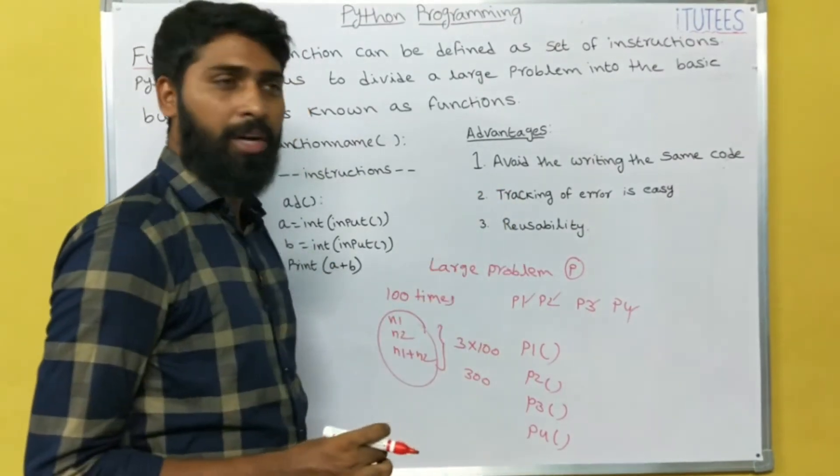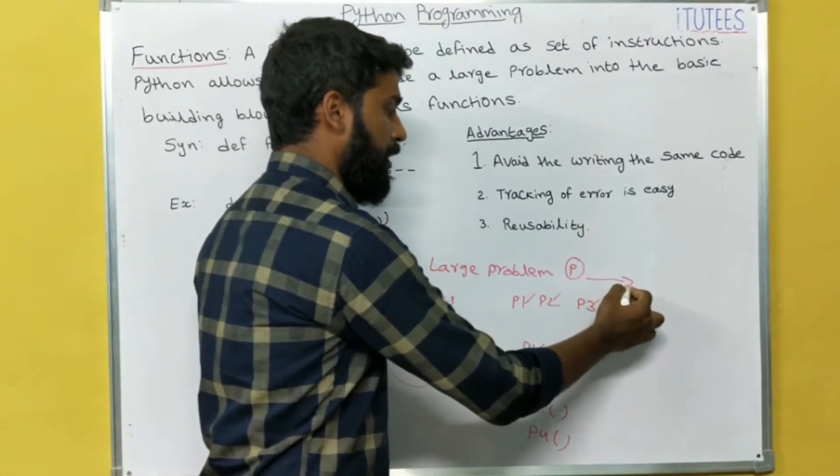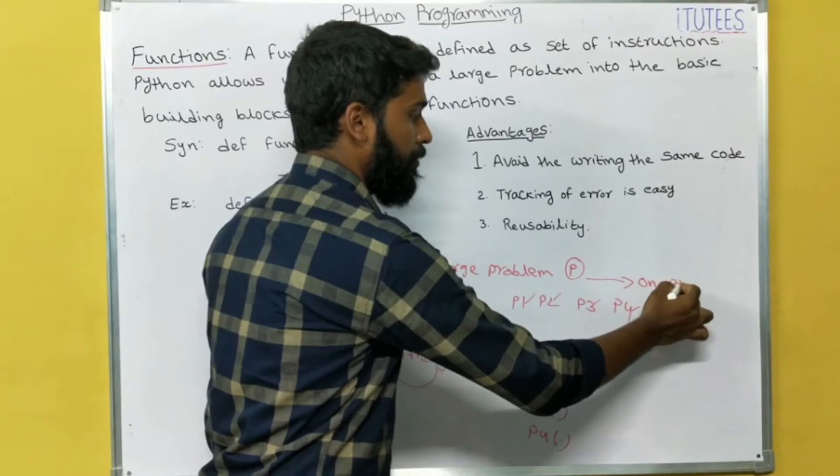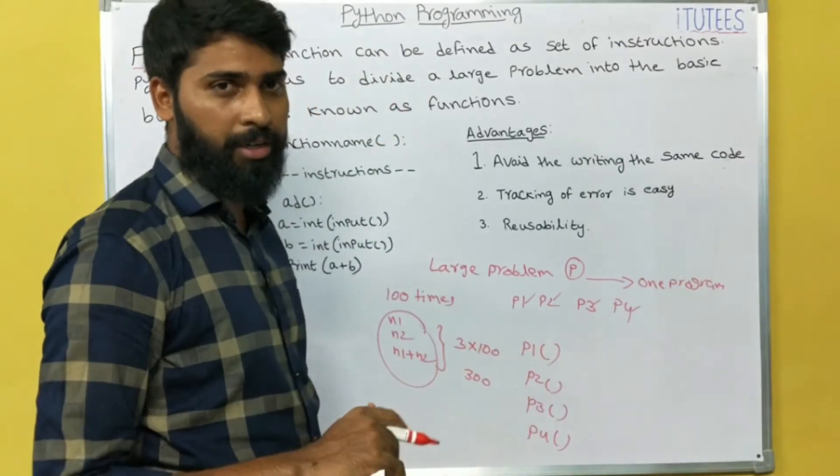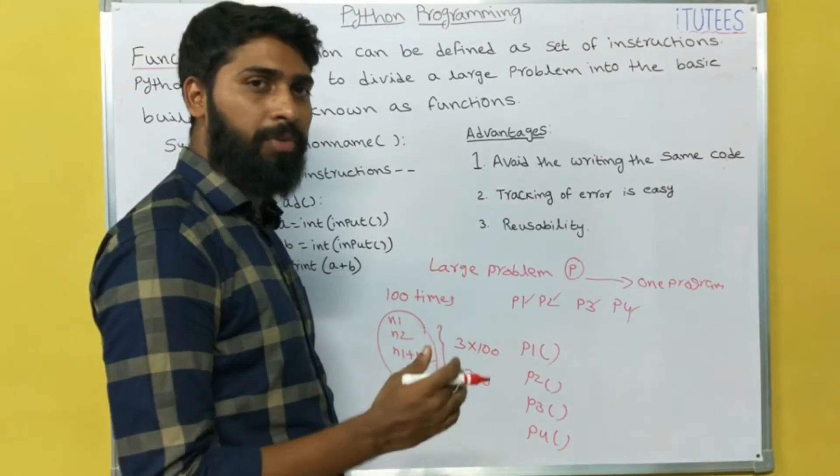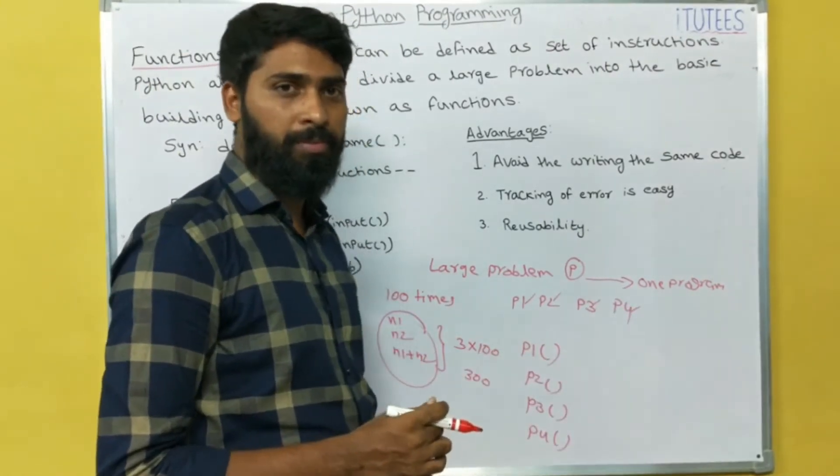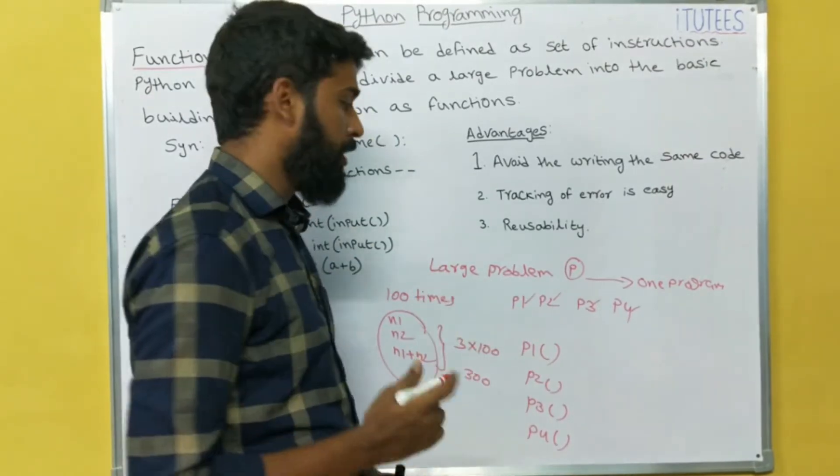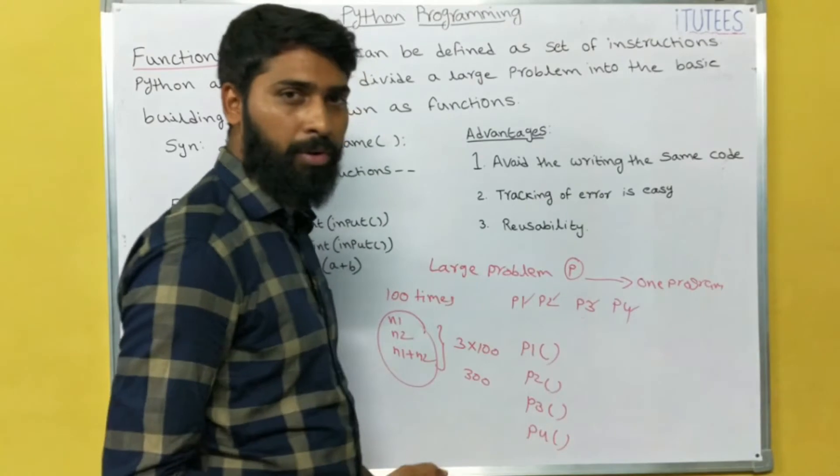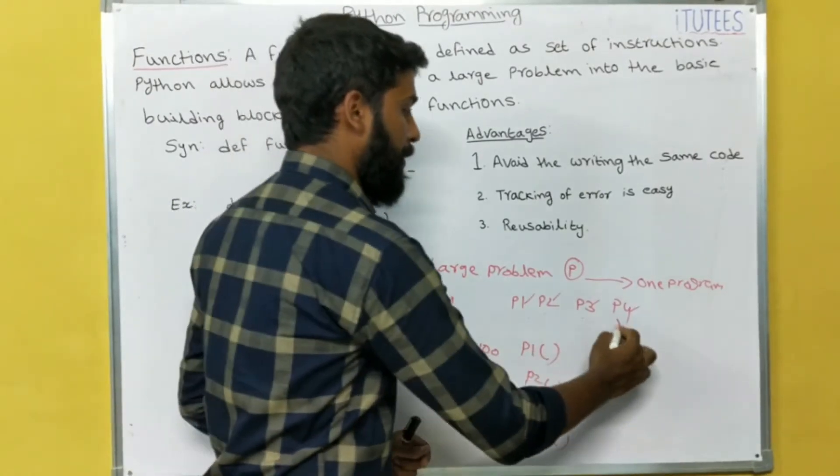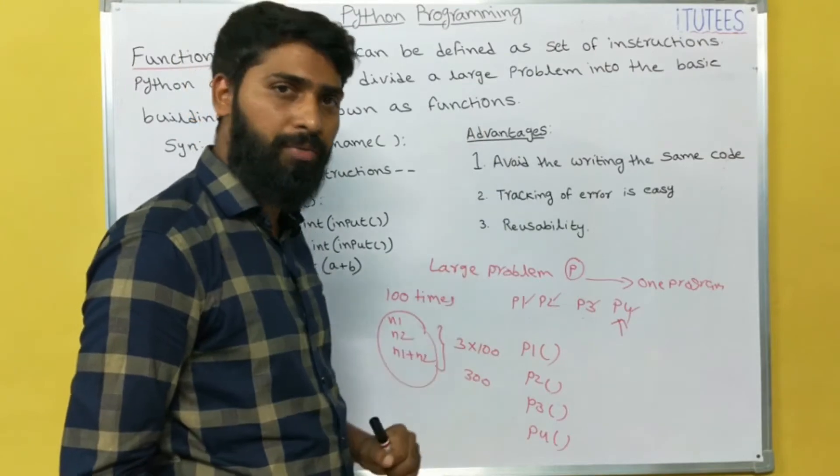And next one is tracking of errors is easy. For example, so this problem is written as one program. Now we got the error. Now it is difficult to find which functionality is not working. If you divide into functions P1, P2, P3, P4, now we get the error in P4, then we can identify that the error is in function 4.